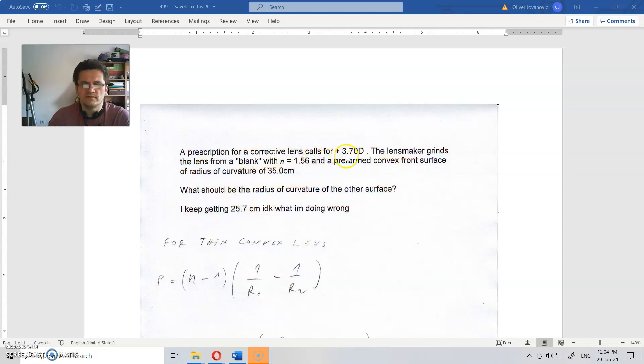A prescription for a corrective lens calls for plus 3.7 diopters. The lens maker grinds the lens from a blank with n = 1.56 (index of refraction) and a preformed convex front surface of radius of curvature 35 cm. What should be the radius of curvature of the other surface?